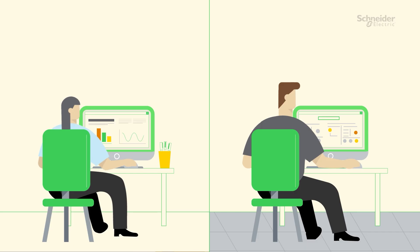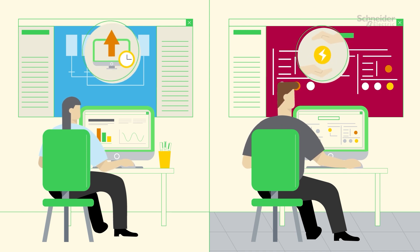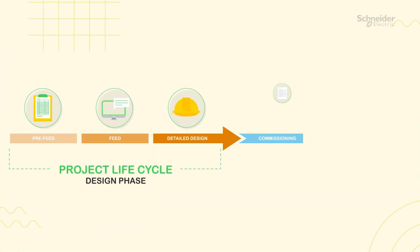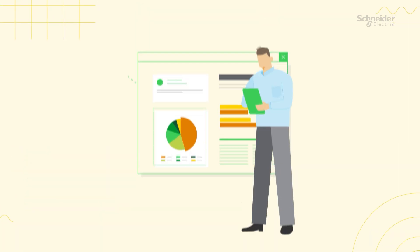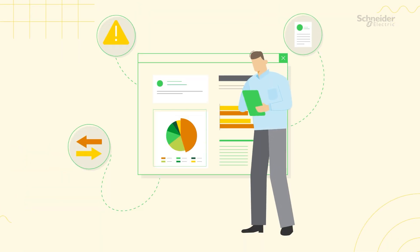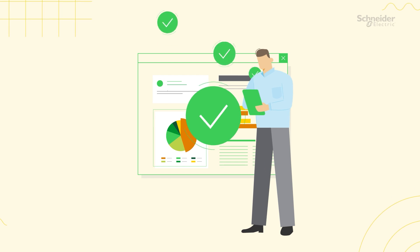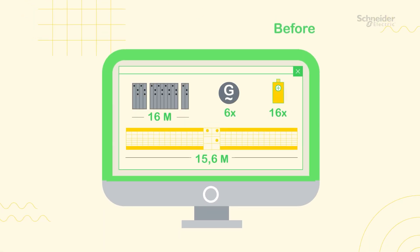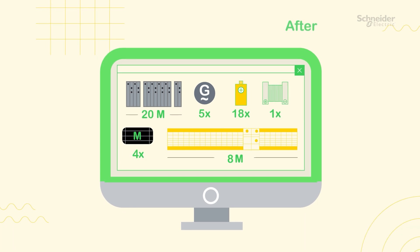EcoStruxure Power and Process co-simulation accomplishes this by combining energy and automation models that have applications throughout the design and operation phase of the project. Doing this helps business leaders assess risks, weigh alternatives, and make informed choices to optimize the life cycle of the project and assets.